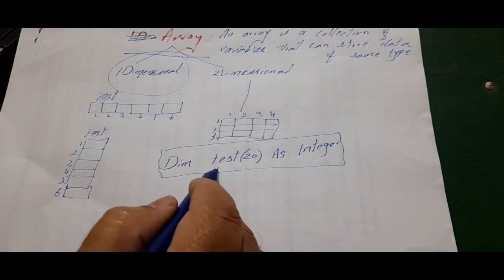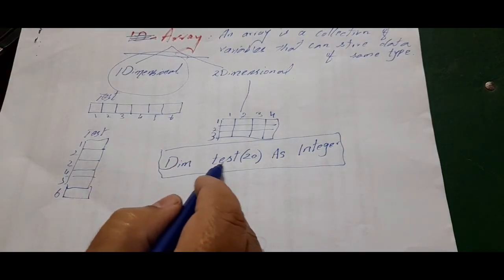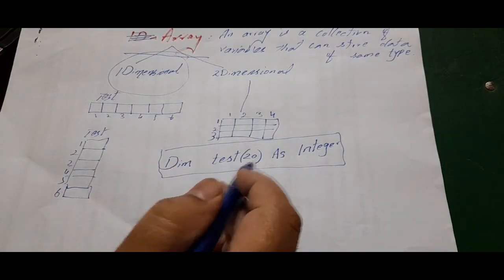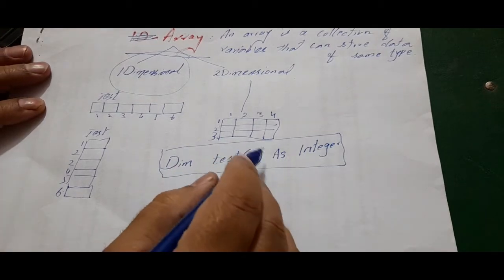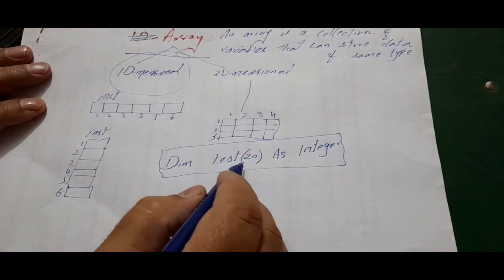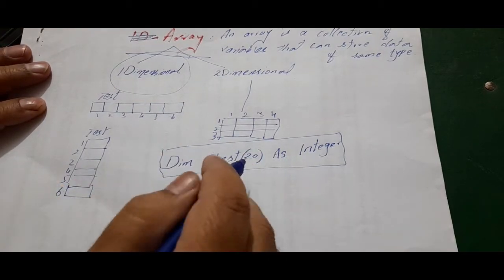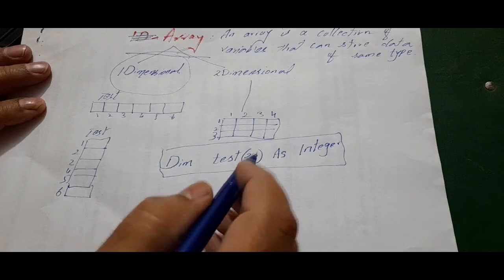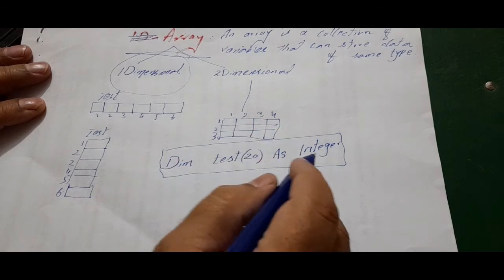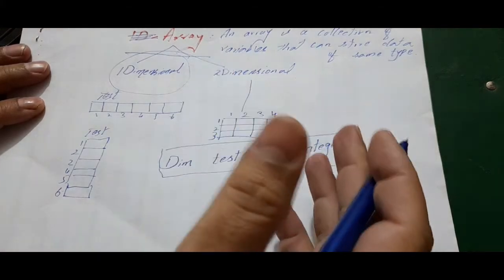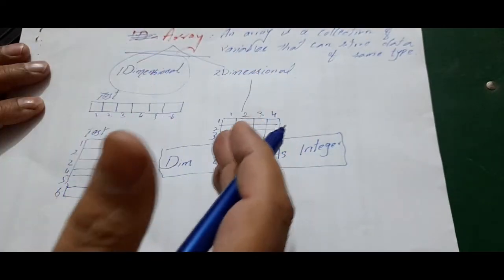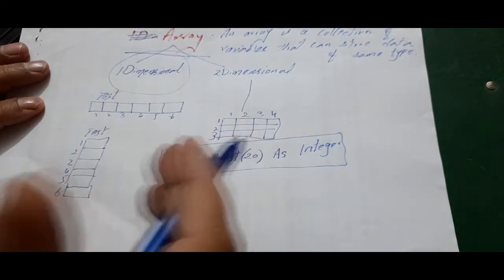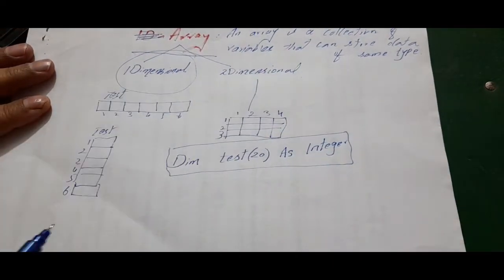So this is how we declare an array: Dim, then the name of the array — it can be any name, A, B, C, X, Y, Z, or any word. Then in brackets we tell it how many variables the array will work for. Then we write the data type — the type of data that will be stored in all 20 different locations of this array.